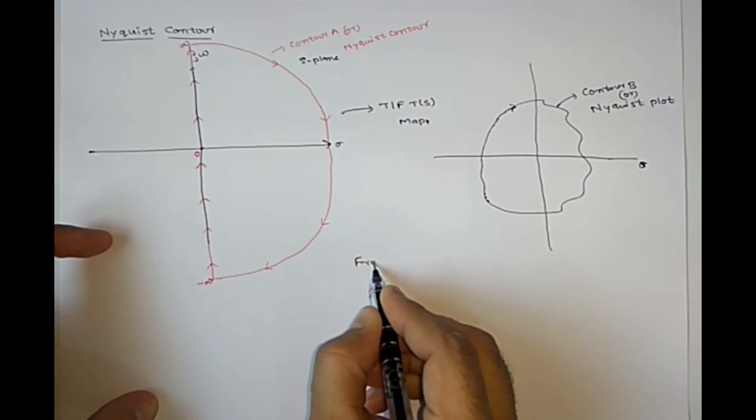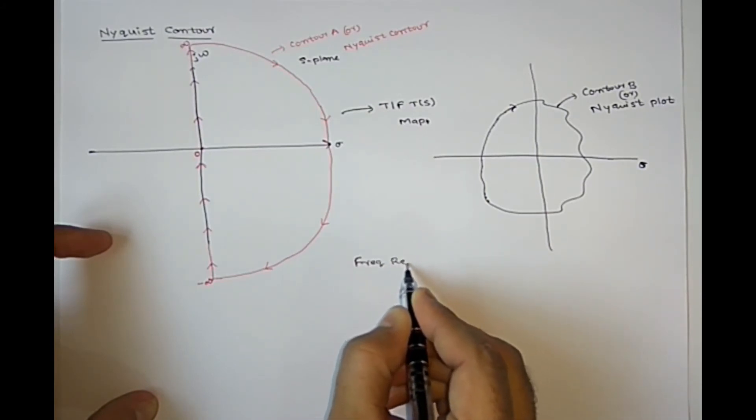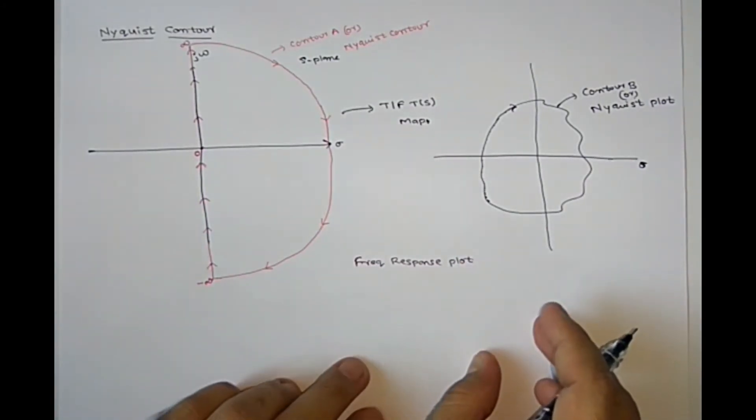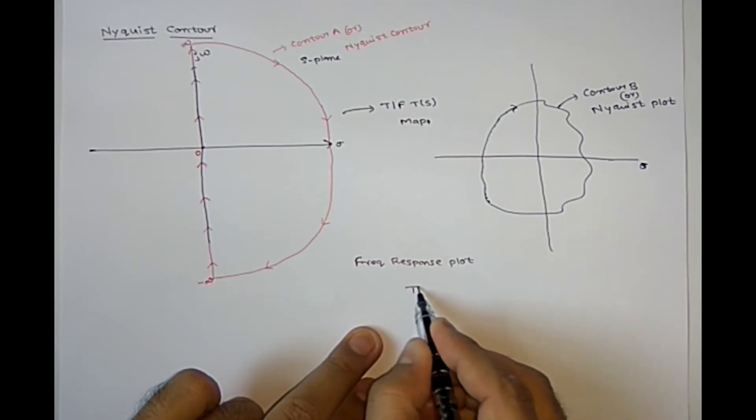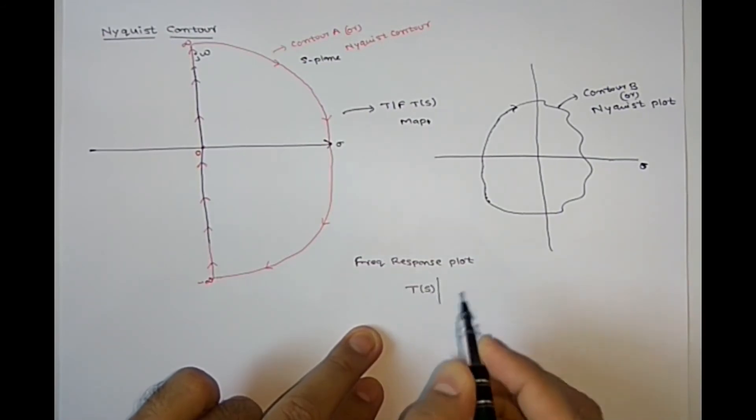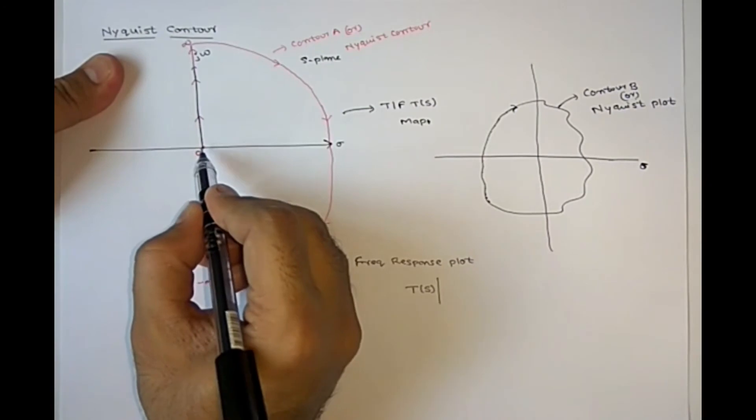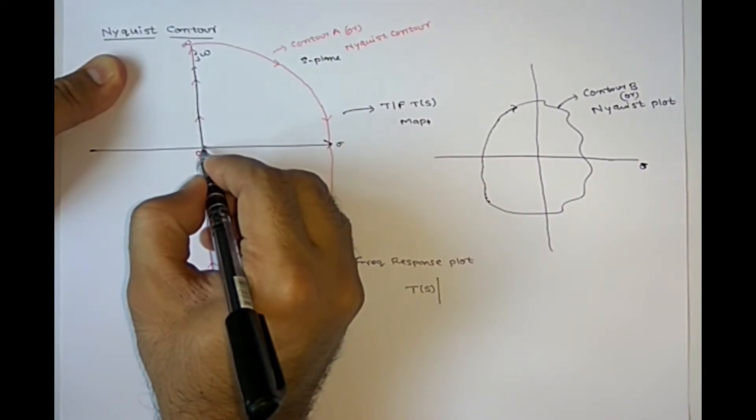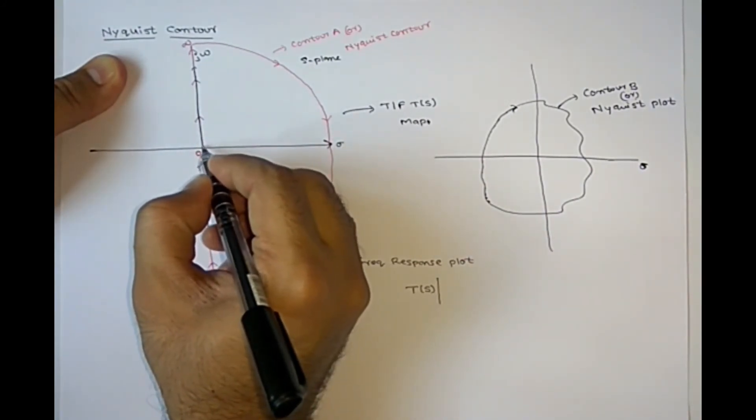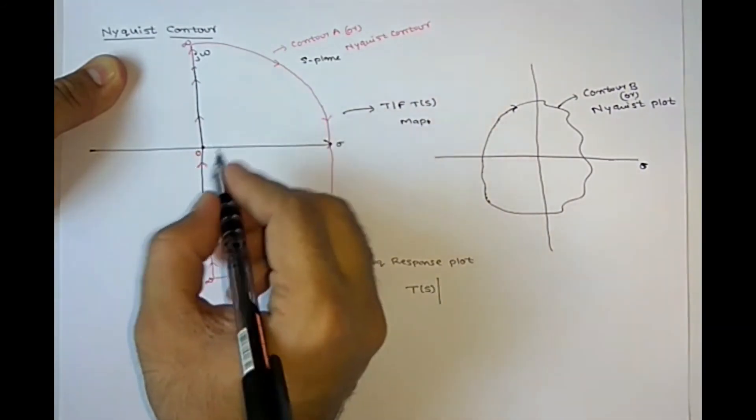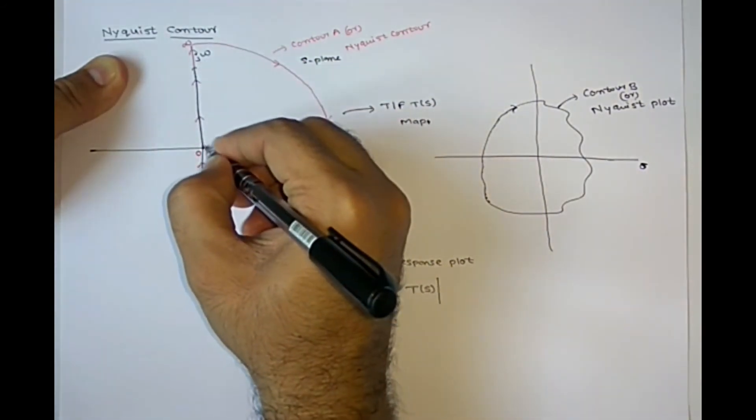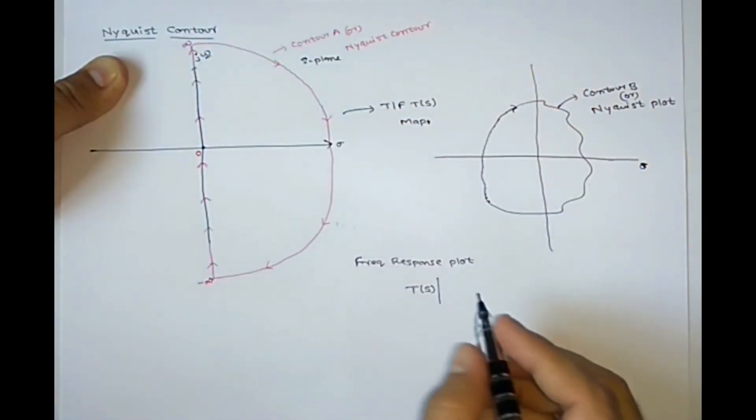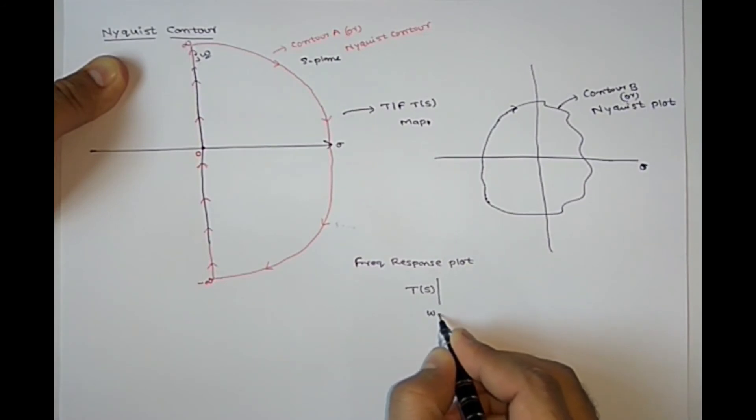Then how it will become a frequency response plot? So let us see here, we will take transfer function. While mapping, you need to take points, each and every point in the contour A. If you observe here, we are covering entire imaginary axis. Imaginary axis is j omega. Here varying j omega means, omega your frequency is zero to infinity you are taking.